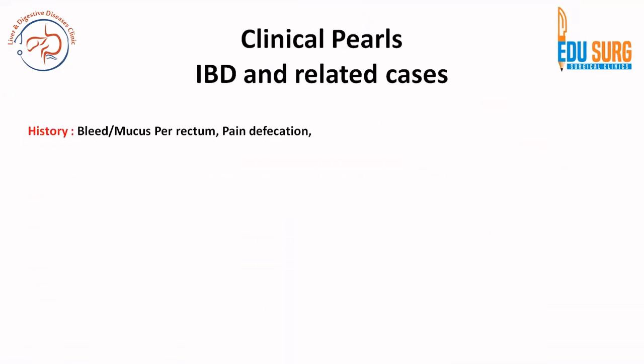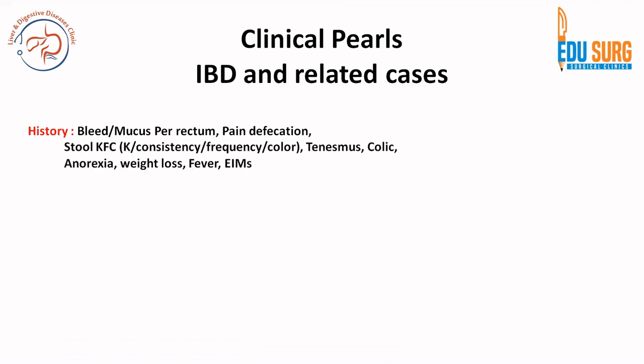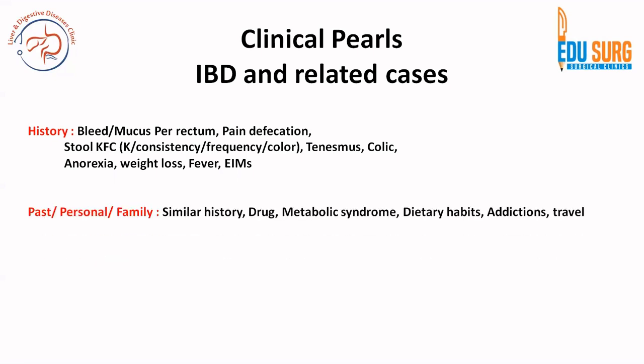In the clinical history for IBD and related disease, patients can have bleeding or mucus per rectum, pain during defecation. Always remember KFC for stool — that is color, consistency, and frequency. Also look for tenesmus, colic, anorexia, weight loss, fever, and extra-intestinal manifestations. These points help understand whether the patient has a colonic or small bowel pathology. Anorexia and weight loss also help in ruling out malignancy and chronic diseases such as tuberculosis or IBD.